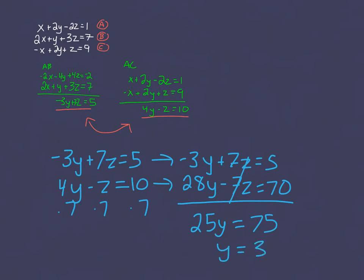When we write our solutions, we always write them in alphabetical order, so I'll have X, Y, Z, and so far I've found that Y is three.